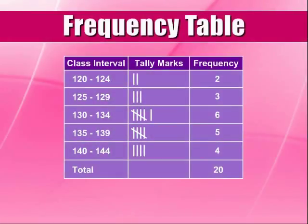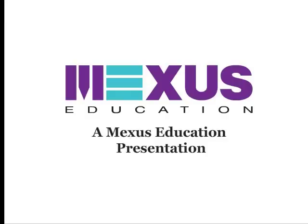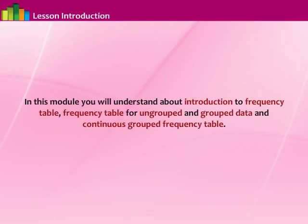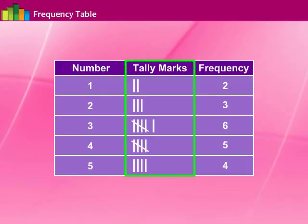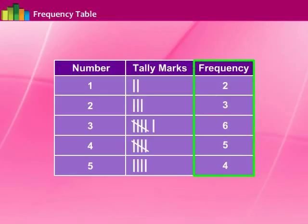In this module, you will understand about the introduction to frequency tables, frequency tables for ungrouped and grouped data, and continuous grouped frequency tables. A table which represents data in the form of three columns — the first column showing the variable or number, the second column showing tally marks, and the third column showing their frequencies — is called a frequency table.